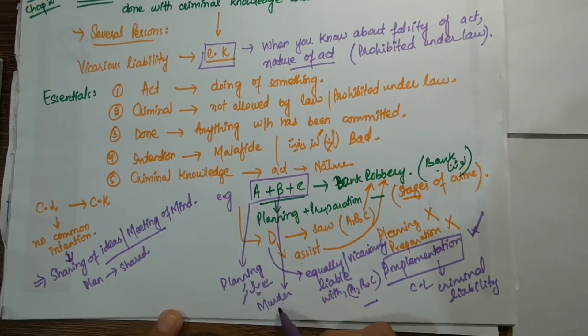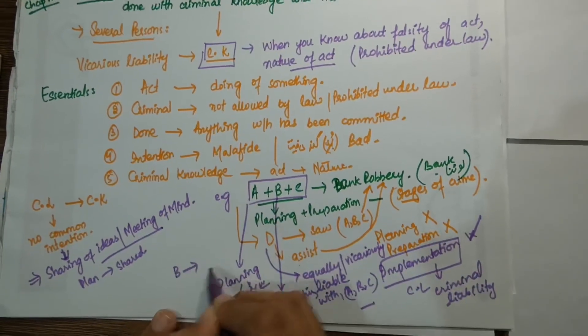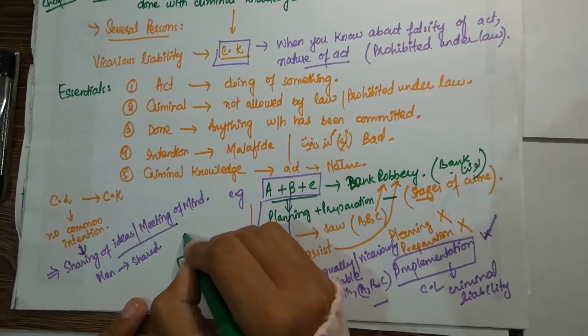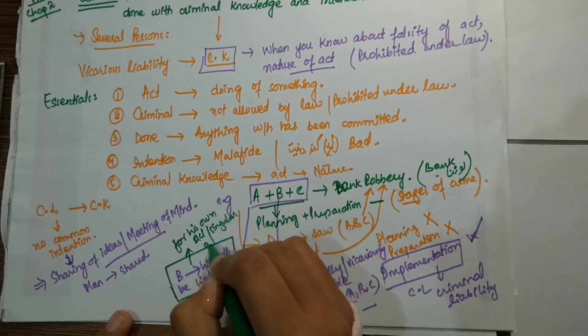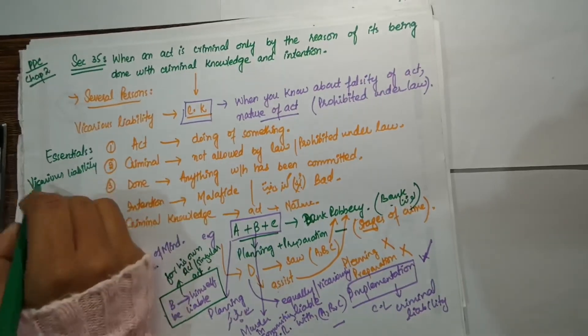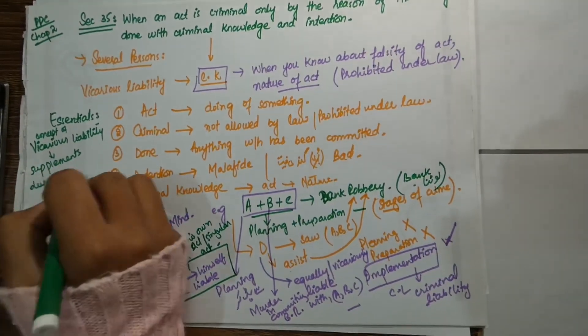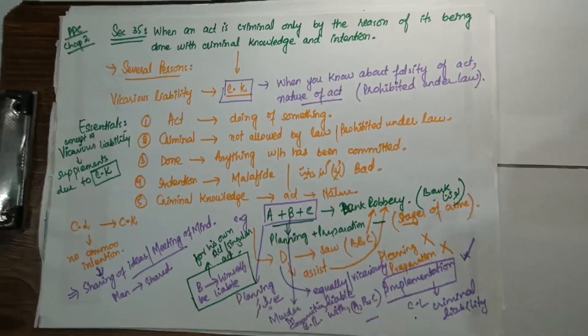Vicarious liability comes due to criminal knowledge. Let's say during this bank robbery, if any person performs an act which was not part of the planning, means kills someone during the bank robbery, then that person will be liable for his own singular act. So here the concept of vicarious liability supplements due to criminal knowledge.